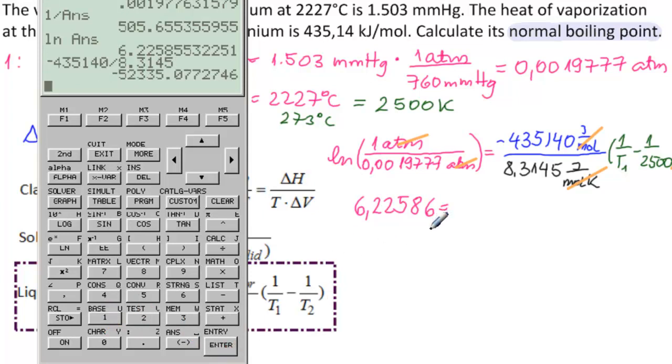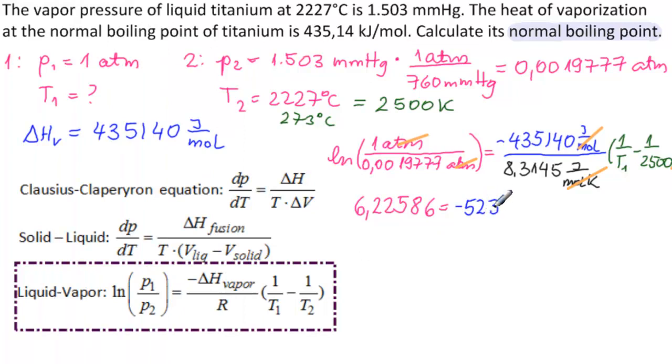So 6.22586 equals minus 435,140 divided by 8.3145. That's minus 52,335.1. And then we have 1 over T1 minus 1 over 2,500.